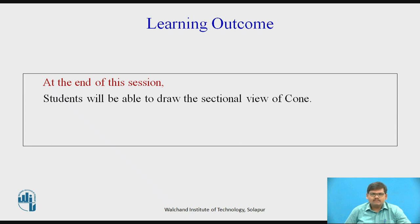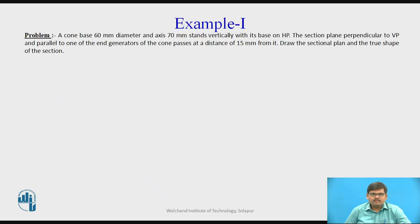Let us move further with an example. A cone with a base 60 mm diameter and axis 70 mm stands vertically with its base on HP. The section plane is perpendicular to VP and parallel to one of the end generators of the cone, passing at a distance of 15 mm from it. Draw the sectional plan and the true shape of the section.